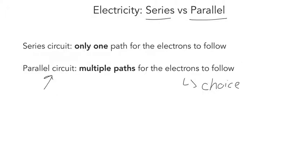An example you can see is a light fixture that has multiple light bulbs in it. If one light bulb burns out in a parallel circuit, you're still going to have light going through the different fixtures. Now if it's a series circuit, it means that if one of the elements stops working, the entire circuit will stop working — because there's only one path for the electrons to follow.